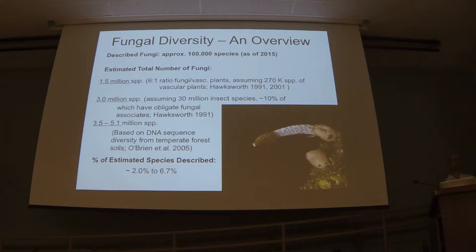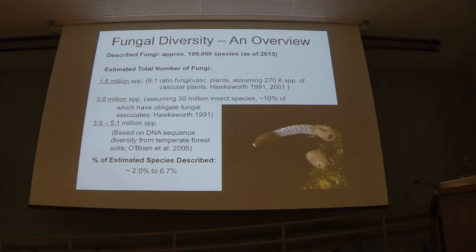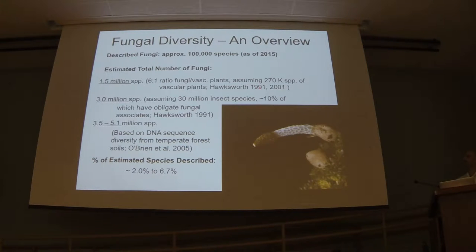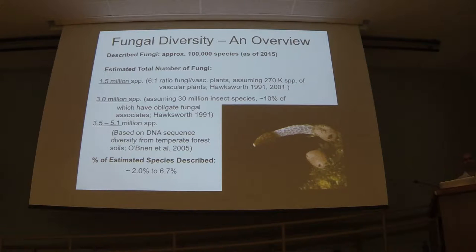We have about 100,000 species of fungi described — those are the Latin binomial names we've put on fungi. Compare that to plants where we have about half a million species described, so you can see fungi lagging pretty far behind. Nobody thinks that's at all reflective of the actual diversity on Earth. Estimates around 1990 and 2000, based on the ratio of plants to vascular plants, estimated maybe 1.5 million species — but that was before people started using genome sequencers to examine fungal diversity, so it's pretty outdated.